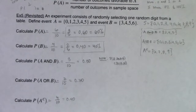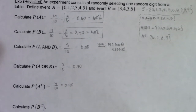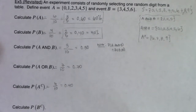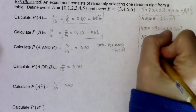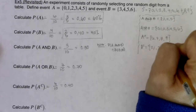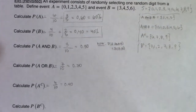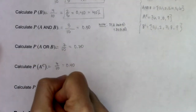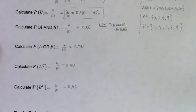Pause and see if you can find the probability of B complement before I do. B had 3, 4, 5, and 6, so the outcomes not in B are 0, 1, 2, 7, 8, and 9. Counting those gives six outcomes. So the probability of B complement equals 6 out of 10, which is 60%.